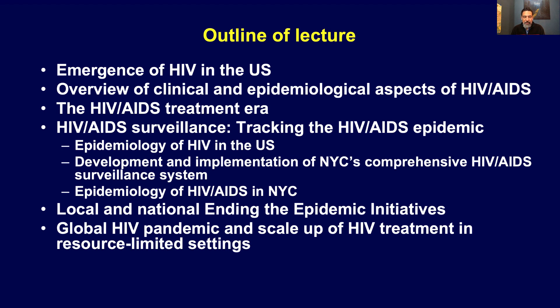Of course, all surveillance is ultimately local, and we can't track what's going on nationwide unless we rely on local jurisdictions to do good surveillance. So we'll delve into how surveillance for HIV and AIDS is done in New York City, and then review some of the information that we've gleaned from HIV-AIDS surveillance here around what the epidemic actually looks like in New York City and how it's evolving.